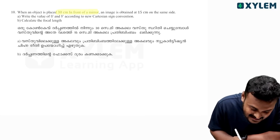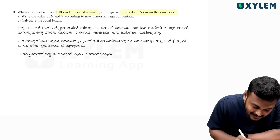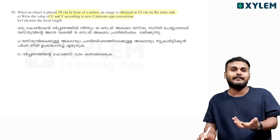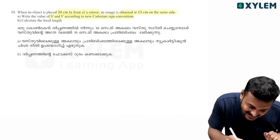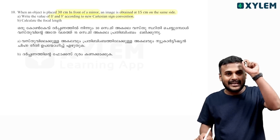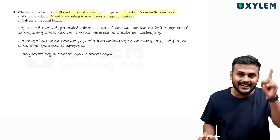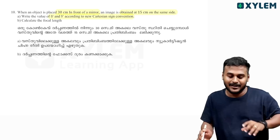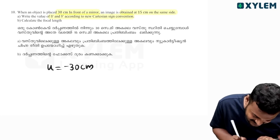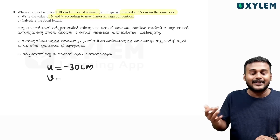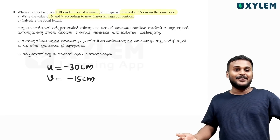When an object is placed at 30 cm in front of a mirror, an image is obtained at 50 cm on the same side. Write the value of U and V according to the new Cartesian sign convention. It is being built for 30 cm. Our image is formed — it is built for 15 cm — for the object, using the Cartesian sign convention. U is equal to minus 30 cm. V is also minus 15 cm. No doubt, simple.